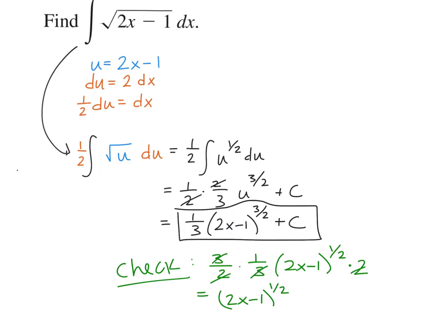To check by differentiation: bring the 3 halves out front, so 3 halves times one-third cancels to one-half. Leave the inside function, raise it to one less power, and then using the chain rule multiply by the derivative of the inside, which is 2. The 2 and the one-half cancel, leaving 2x minus 1 to the one-half, which is the square root of 2x minus 1. Therefore we did this problem correctly.